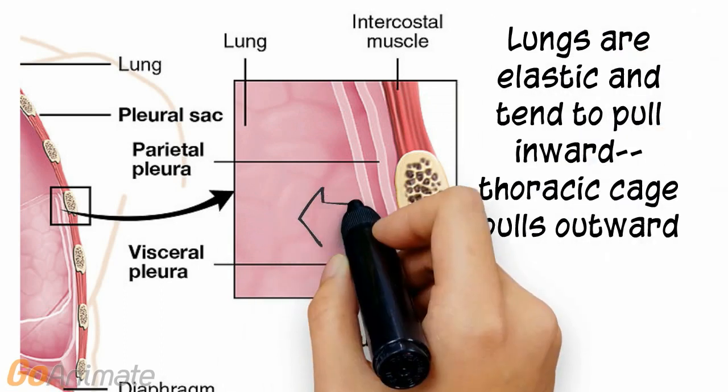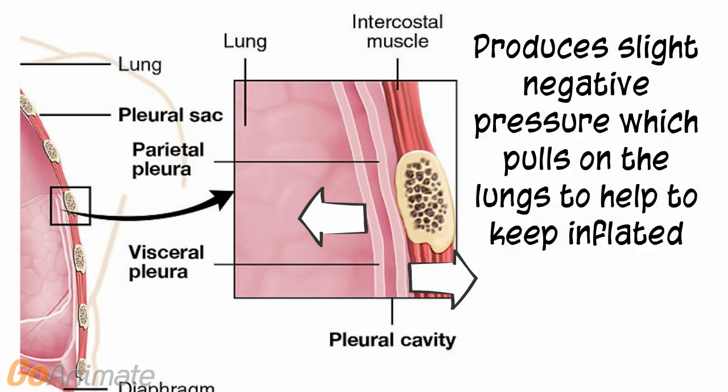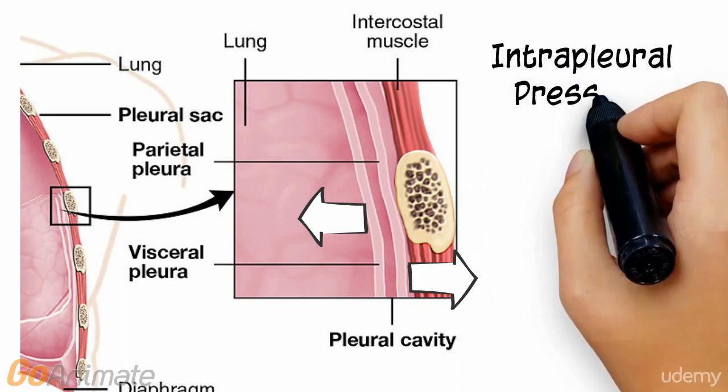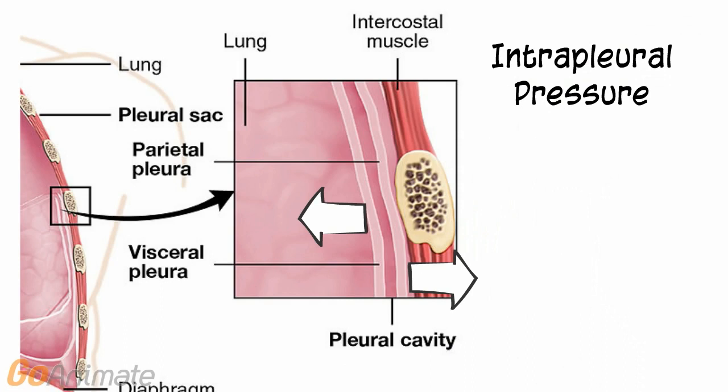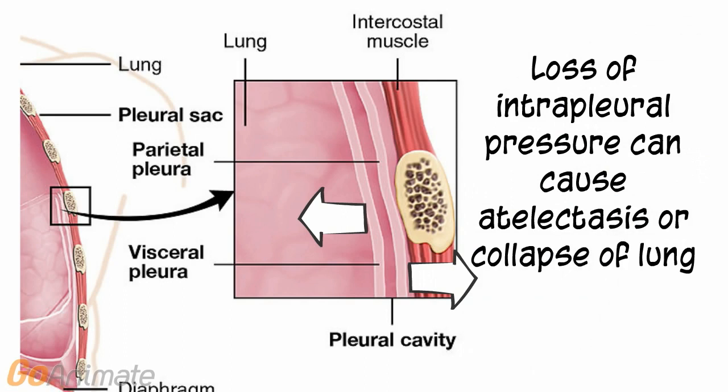Also, the inward pressure of the elastic lungs opposes the outward pressure of the thoracic cage, which causes a slight negative pressure, which also helps to keep the lungs inflated. This pressure is called intrapleural pressure. Loss of intrapleural pressure can cause collapse of the lung, or atelectasis.